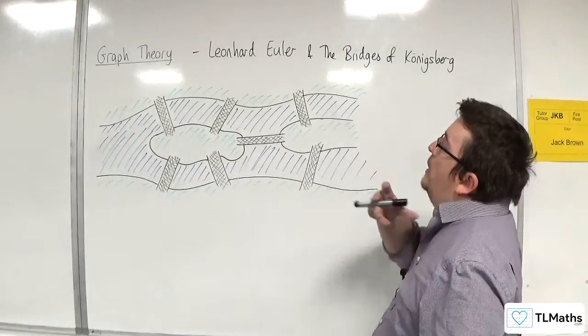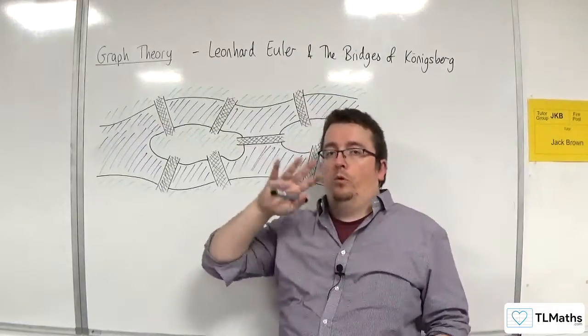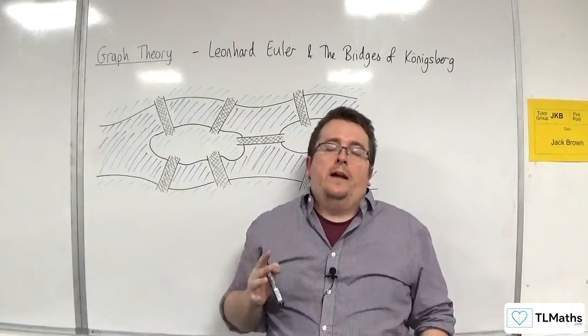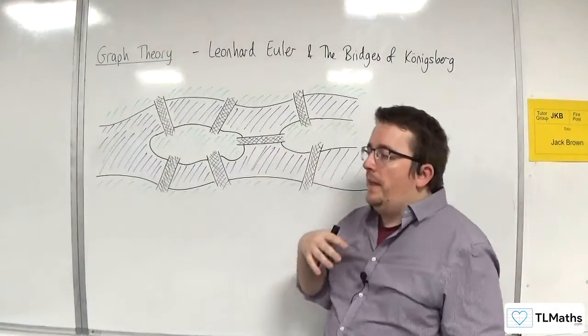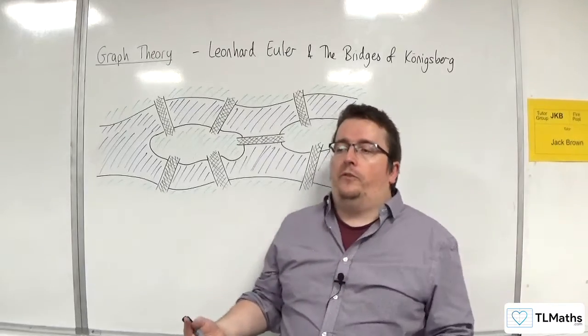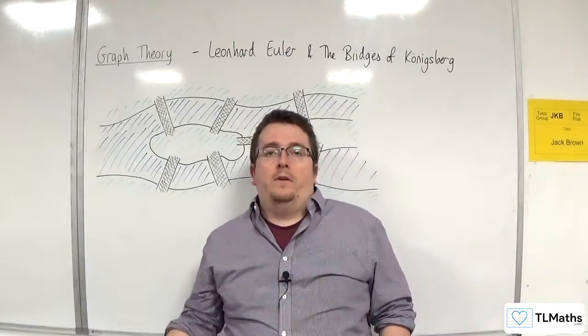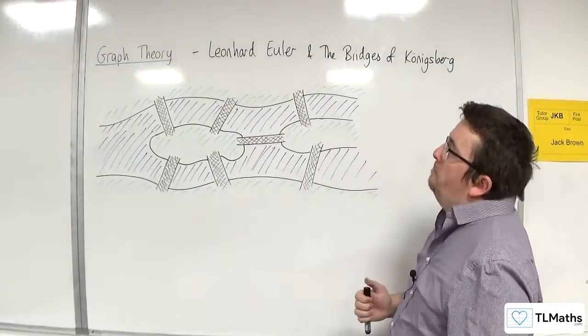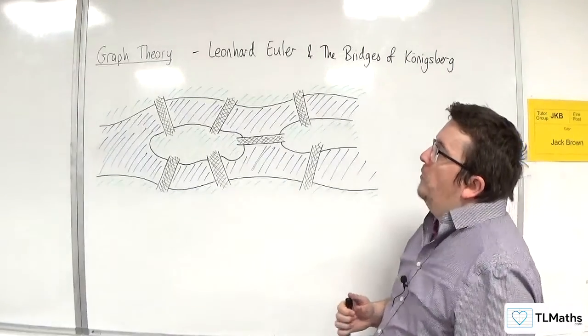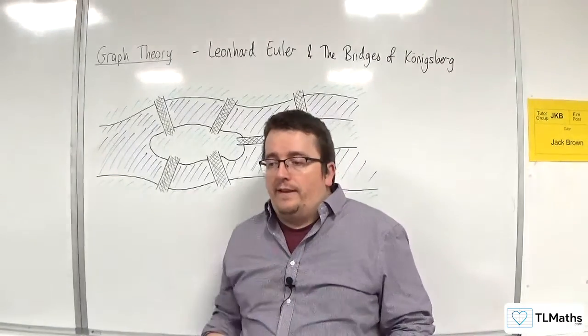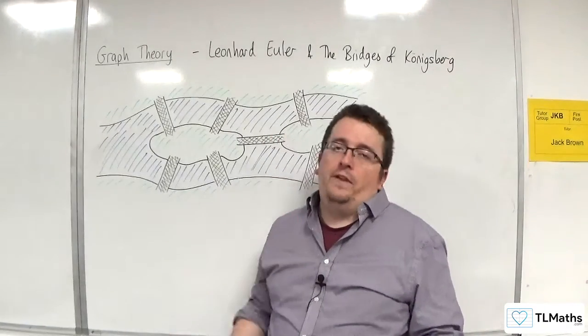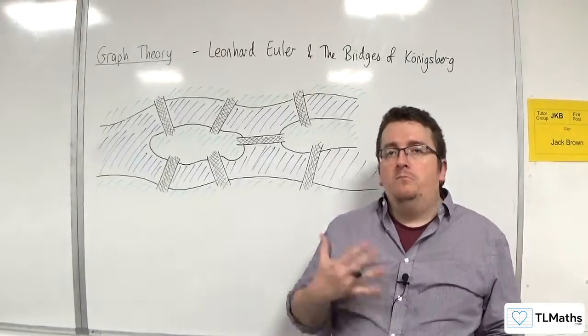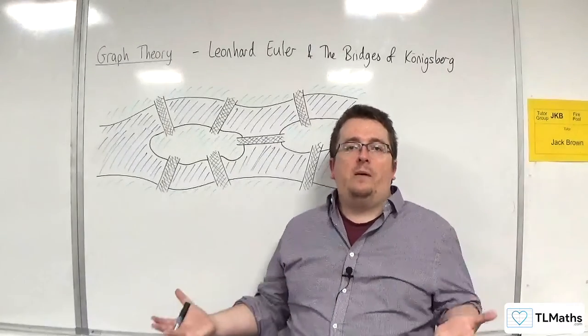Euler, you'll see his name pop up all over the shop in mathematics. One of the people that popularized E, the number E, and gave it its letter. You've also got Euler's identity, does lots of things in pure mathematics. So you might be a bit surprised that he'd also come up here.